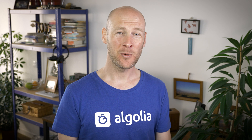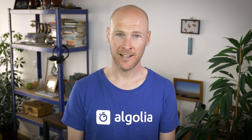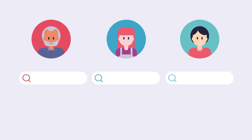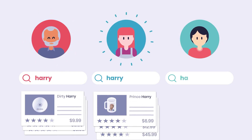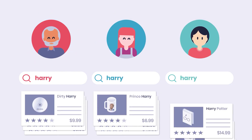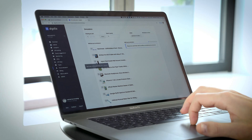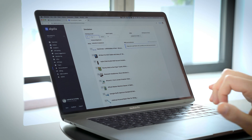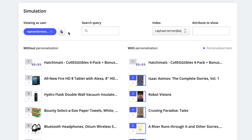One of the most powerful and exciting abilities of search today is personalization, which allows users to get results that match both their query and their preferences. These are based on their interaction with your website or app, which means more relevant results for everyone.